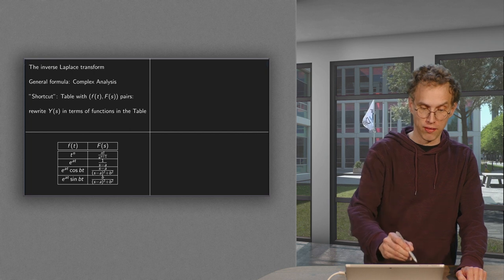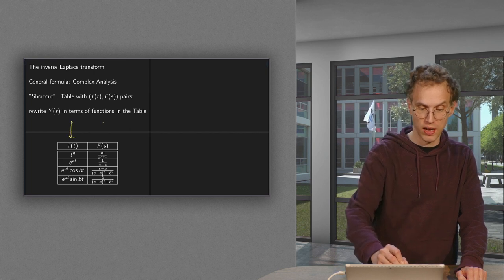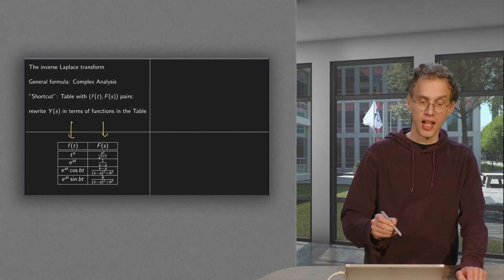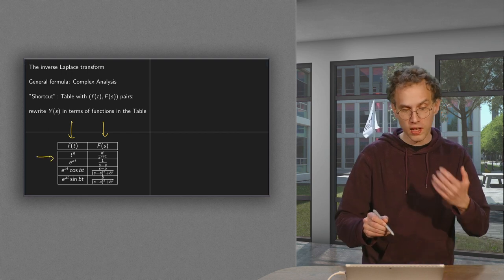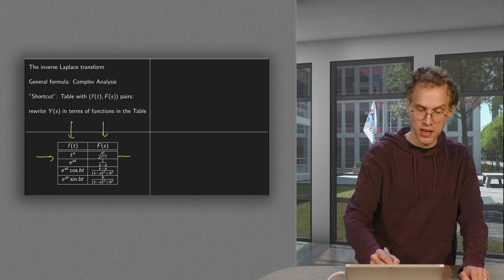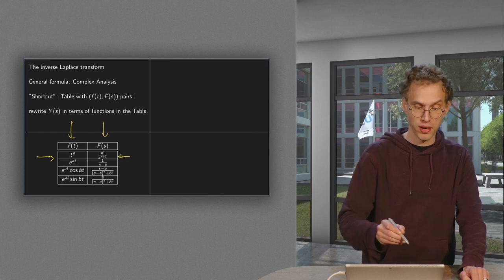We have our f(t) in this column, our f-bar(s) in that column. And we have done t to the power n. The Laplace transform turns out to be n factorial divided by s to the power n plus 1.